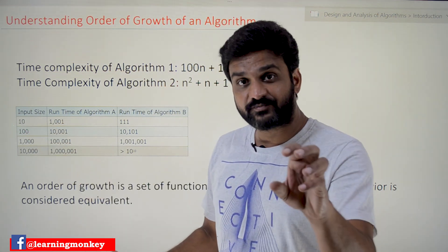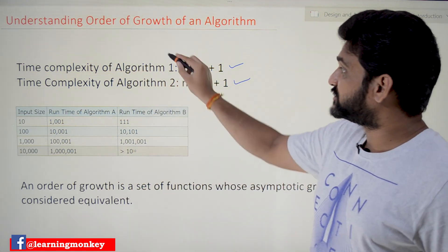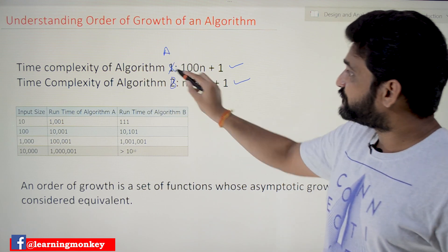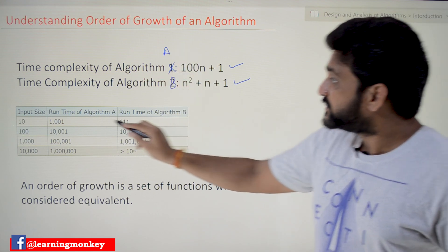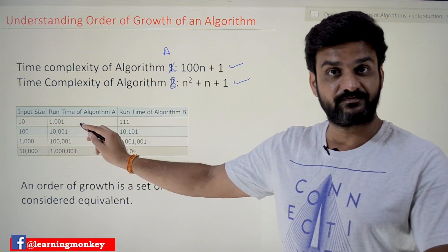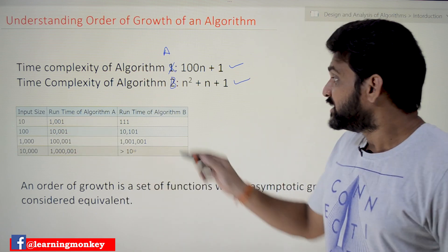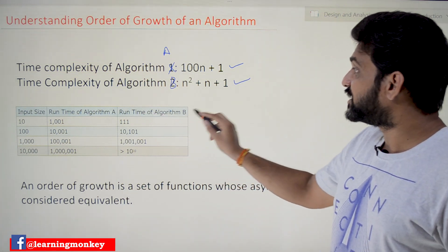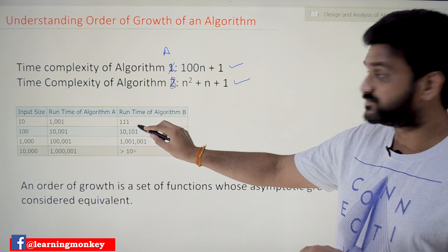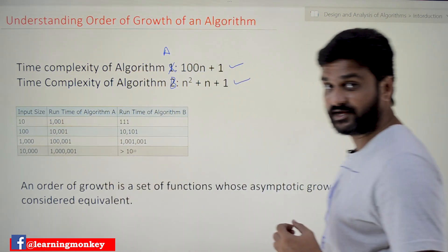For example, if you have an input size of 10, and we consider these as algorithm A and algorithm B, the run time of algorithm A is 1001 steps, meaning that many number of steps are getting executed. The run time of algorithm B is 111, so algorithm A is having the highest number of steps running here.